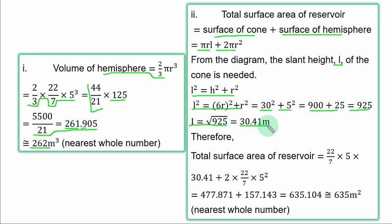Therefore, the total surface area of reservoir is equal to, so you come back here now, where you have π as 22/7 times 5 the radius times the slant height. That is 30.41. Plus, for the hemisphere, you have 2 times π, 22/7 times the radius 5 squared. If you simplify the part of the cone, you have 477.871.